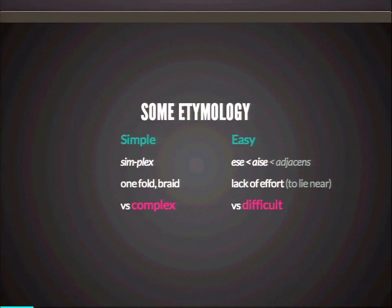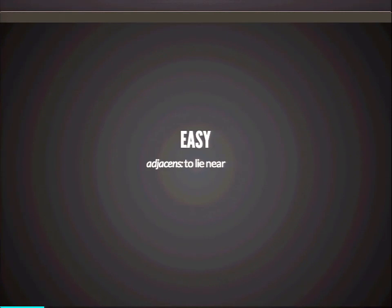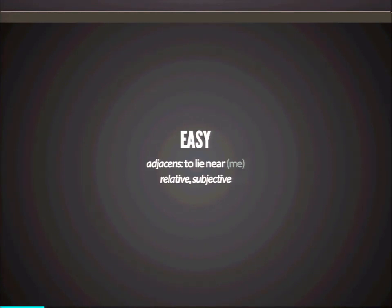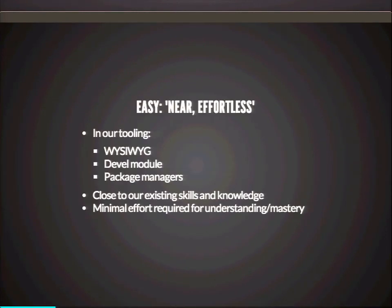The opposite of easy is difficult, though I don't really deal with difficult too much in the talk. It's really much more simple and complex and easy that I want to talk about. So easy — again, to lie near. There's something implicit in this very definition: to lie near, there needs to be something that it is near — basically an agent. Me. In many ways easy is relative and subjective. It's not something which is about the thing itself — it's about my interaction with the thing. How near is the thing to me? And when we talk about easy in the concept of working with software, a lot of what we're talking about is how near is it to my current understanding, my existing skills and knowledge.